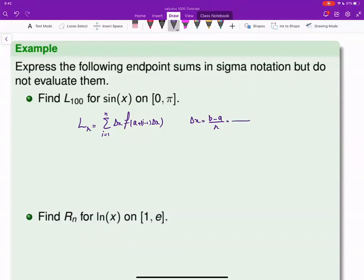And here, A is this guy, and B is π. So I have π minus 0 over N. So delta X is π over N. Then everything else is there. So L_N in general is given by that.